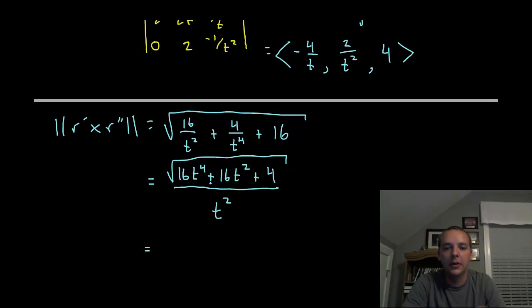That actually cleans up a little bit. You can pull out a common factor of 4 and then break that product apart, and the square root of 4 would be 2.